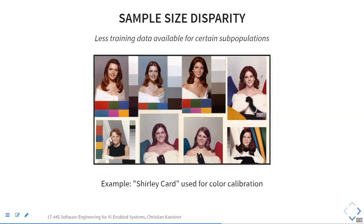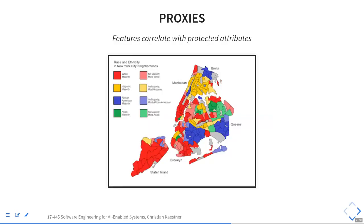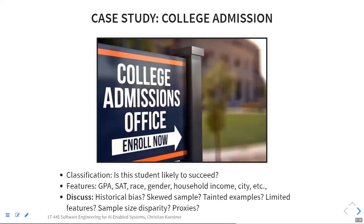Sample size disparity: we may have way more data on students from India than from Bangladesh, South Africa, or Egypt. Proxies: even if we don't consider gender, race, or country of origin, the undergraduate school attended is potentially a proxy for gender or class hierarchy. Household income, city, or zip code can substitute for university attended or available opportunities.